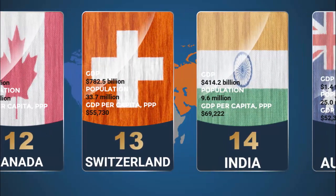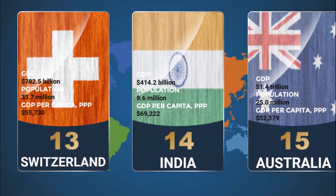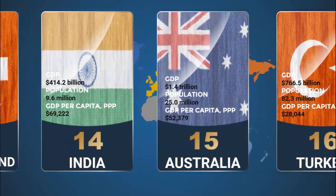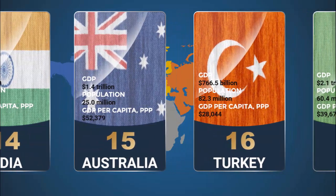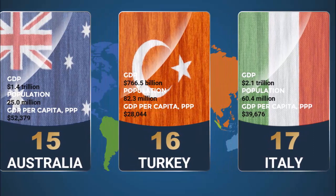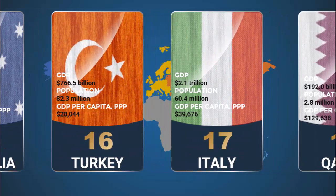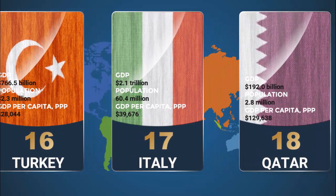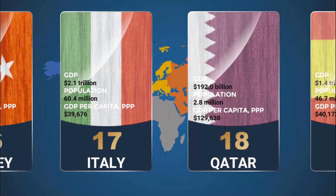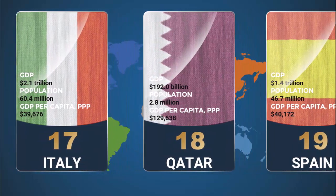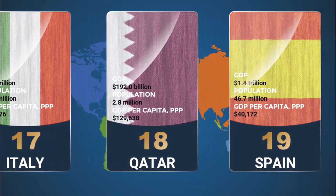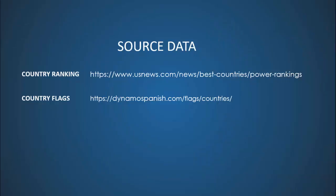Number 15 is Australia, 14 is India, then Turkey. Number 17 is Italy, then Qatar, and the last two are Spain and Sweden. The source data — I got this country ranking from usnews.com, and you can get the country flags for free from a particular website.